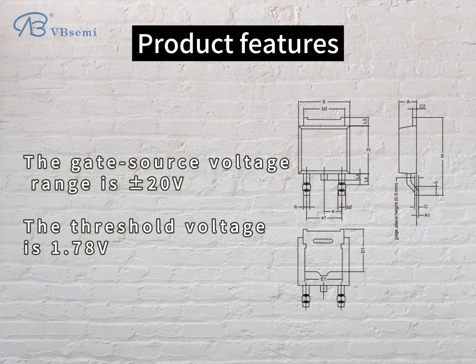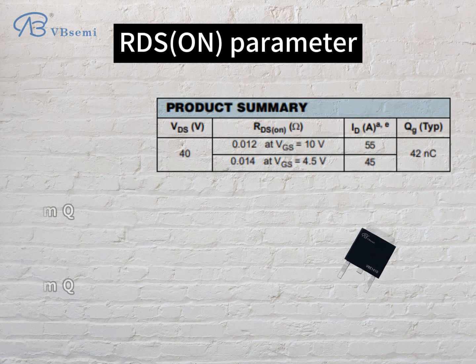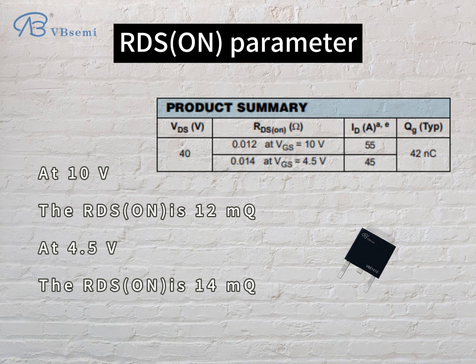The gate-source voltage range is plus or minus 20V, and the threshold voltage is 1.78V. For the RDS(on) parameter: at 10V the RDS(on) is 12mΩ, and at 4.5V the RDS(on) is 14mΩ.